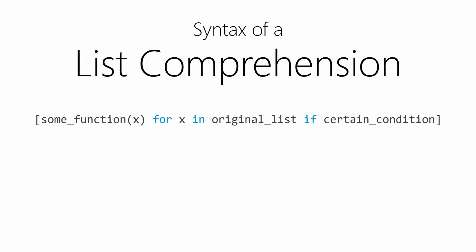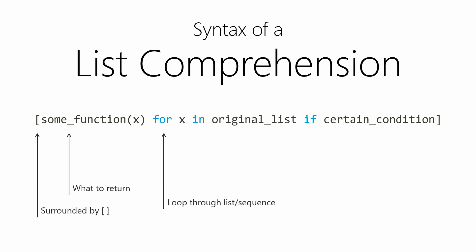Let's jump into the syntax of a list comprehension. A list comprehension looks similar to a list in that it's also surrounded by square brackets, but that's about it. The first item we always specify is whatever we want to return — in this case, we're going to perform some function on X and return the result. Then we have a for loop, which loops through some sequence or list and assigns each item to X. And lastly, we can also have a conditional statement at the end, which lets us filter results — for example, if we want all the even numbers.